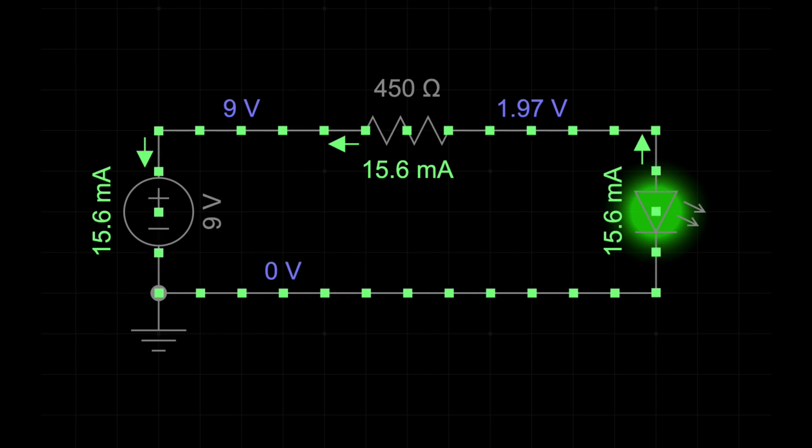To put it simply, voltage drop is the reduction in electric potential as the current flows through the resistance of a component. It's like the energy used up by that component to perform its function, whether that's lighting an LED or generating heat in a resistor.